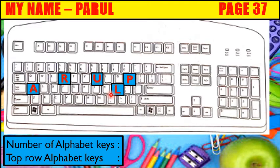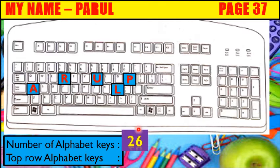Like this, you write your name on the top of the keyboard and color the letters present in your name with blue color. Then, write the number of alphabet keys present on the keyboard. There are 26 alphabet keys on the keyboard. After watching this video, you yourself count and see the number of alphabet keys from your computer textbook. Now, write the top row alphabet keys. They are Q, W, E, R, T, Y, U, I, O, P.